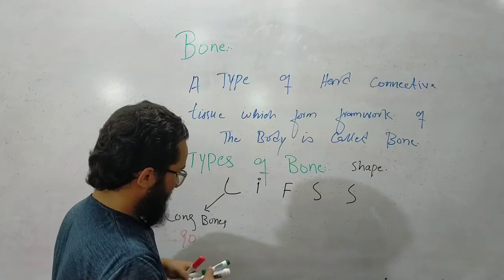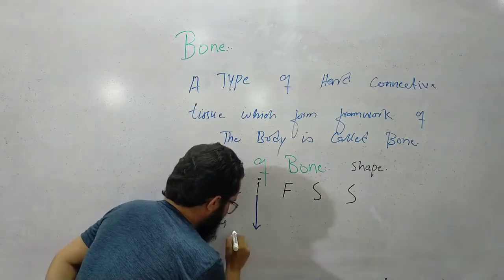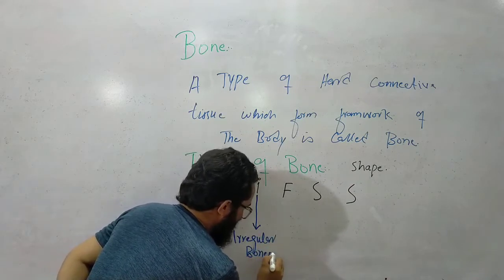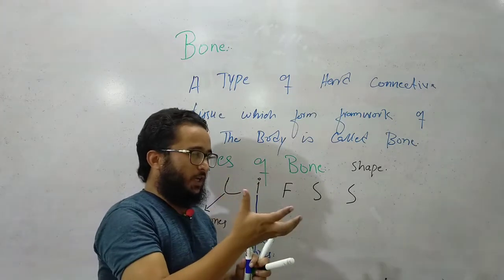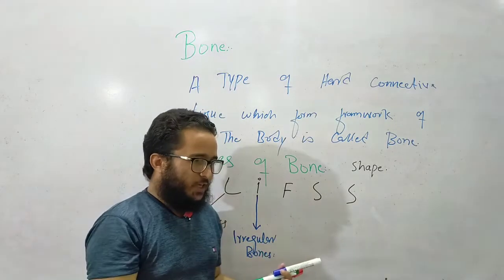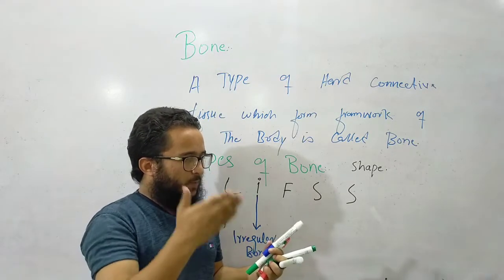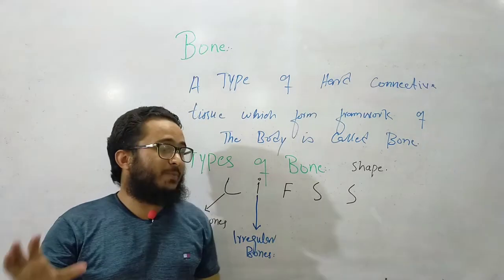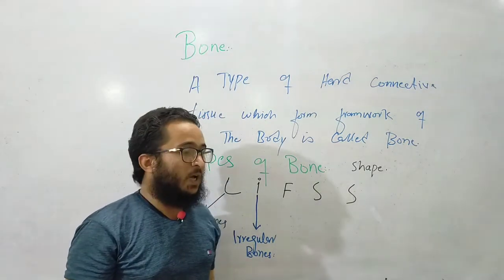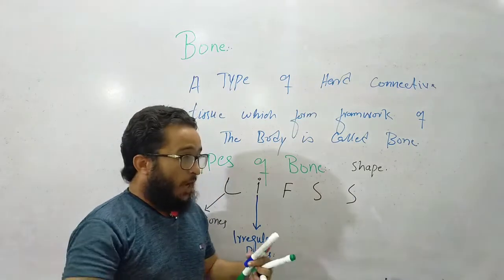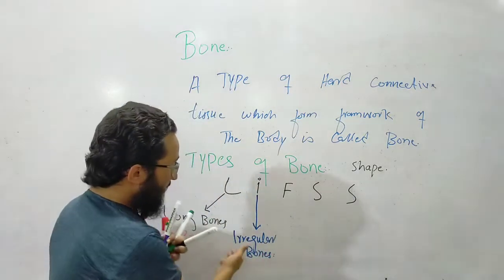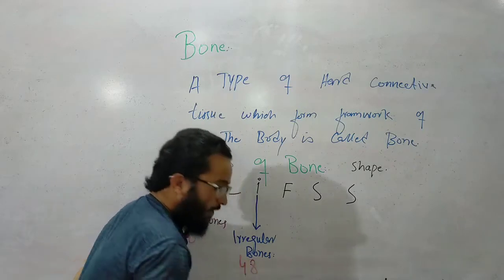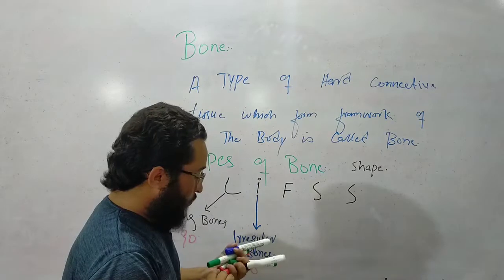Then I, which means irregular bones. Irregular bones have no simple or specific geometrical shape. They don't have a specific bone structure. For example, vertebral column, face bones, and ear bones. These are irregular bones.